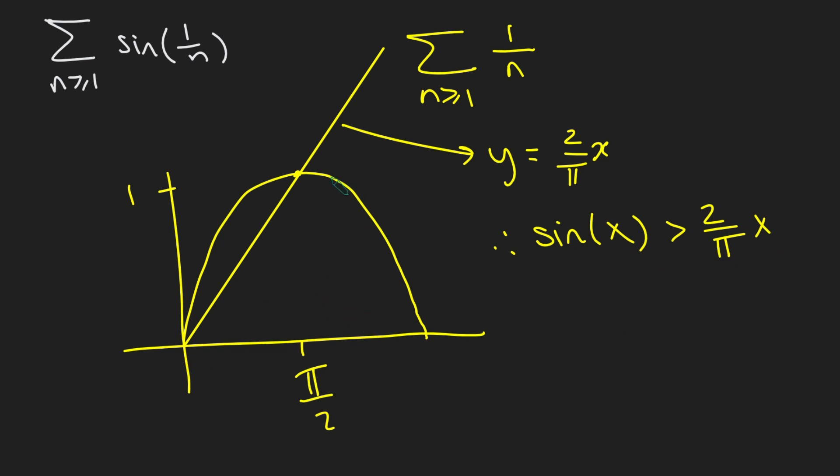But that's actually all we need here, because 1 over n, even if n is 1, that's going to be sine of 1, and 1 is less than pi over 2. And so therefore, I can conclude that sine of 1 over n is bigger than 2 over pi times 1 over n.